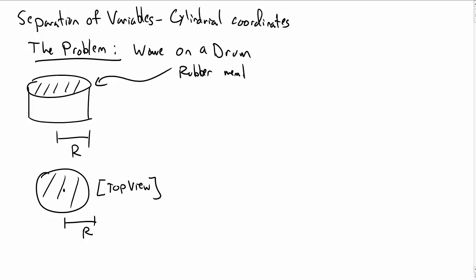Consider a rubber membrane that is stretched over a circular frame. That circular frame has some radius r. And we're interested in the vibrations of this membrane. So we want to know what the vibrations z of the drum do.